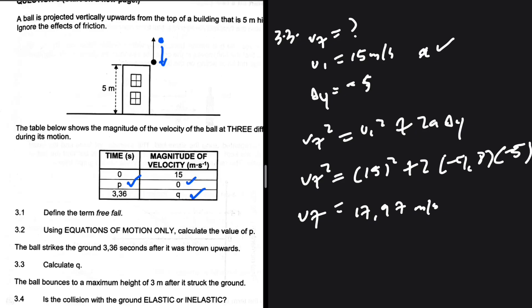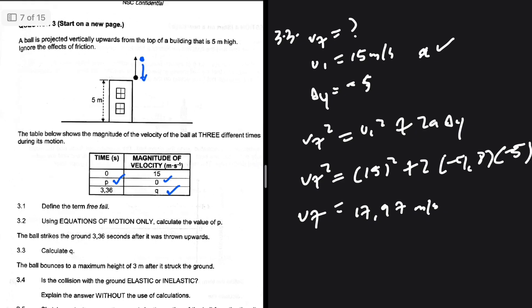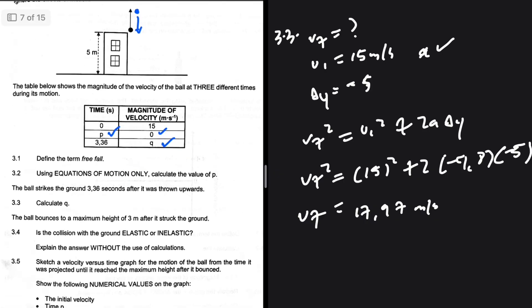So vf is 17.97 meters per second. What are we looking for? Calculate q. So q is the magnitude of velocity. We don't need the direction. We're just looking for q. But we know that it is downwards. 3.4: The ball bounces to a maximum height of 3 meters after it struck the ground. Is the collision with the ground elastic or inelastic? Explain the answer without the use of calculations.